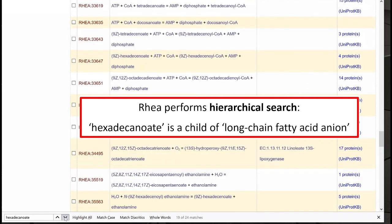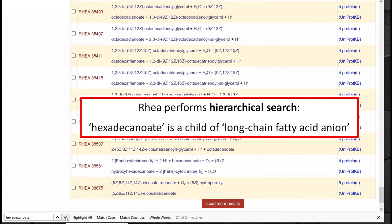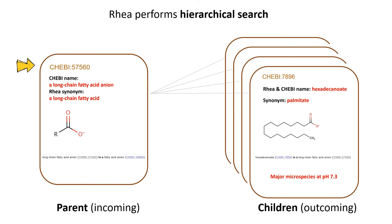This nicely illustrates the fact that the default search in RIA is a hierarchical search. If we search by reaction participant with a ChEBI ID, we will retrieve all the RIA reactions that involve this ChEBI molecule or one of its children.